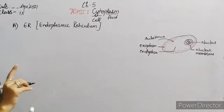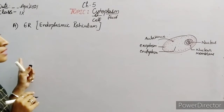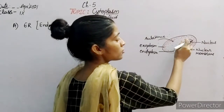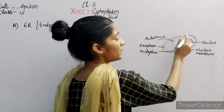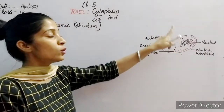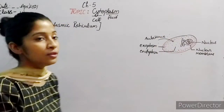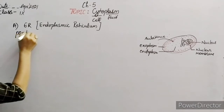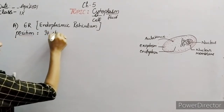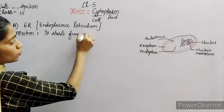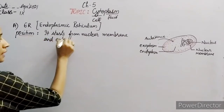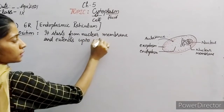Every organelle has its specific position. If we see the endoplasmic reticulum, it is present near to the nuclear membrane and it may extend up to the cell membrane. So position-wise, it starts from the nuclear membrane and extends up to the cell membrane.